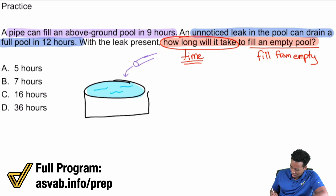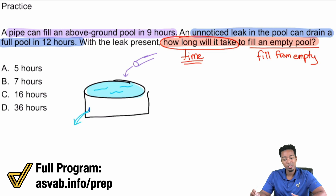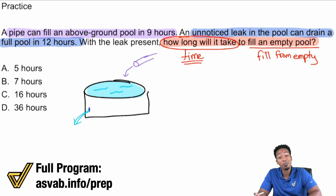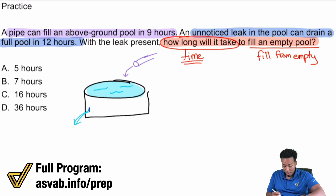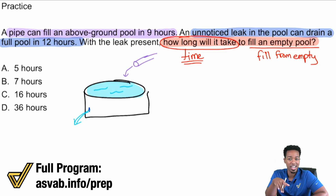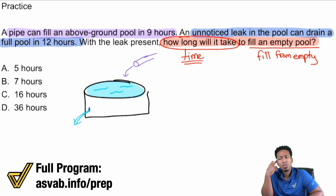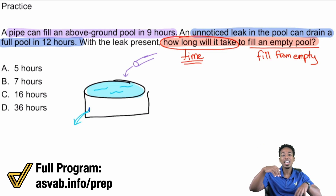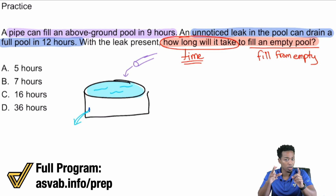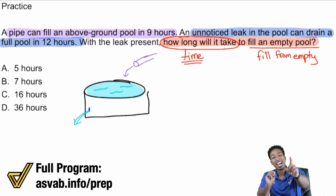There's an unnoticed leak, and it'll drain a full pool in 12 hours — water is actually coming out through that crack. So this is a combined work word problem, but the leak and the pipe are not working together in the way you think. When you set up your formula, you are not adding these fractions together. The pipe is filling the pool; the leak is draining the pool. So it has to be subtraction.